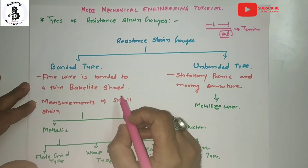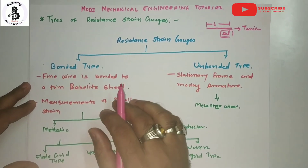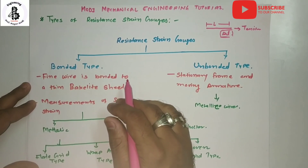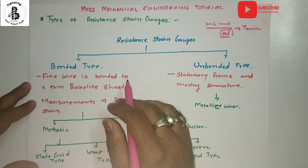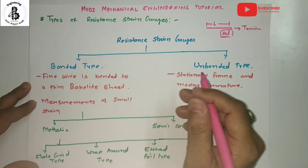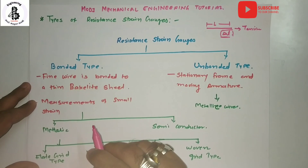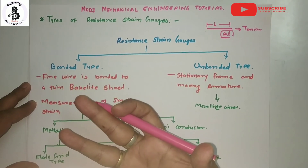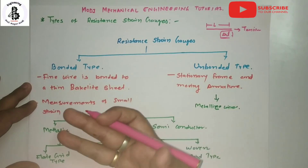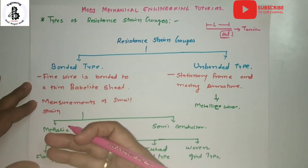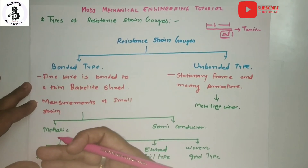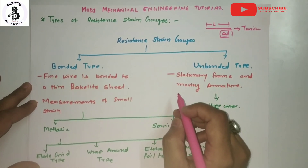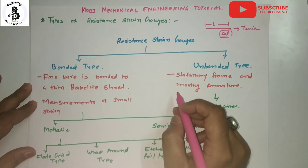The principle of operation of the strain gauge is simple: when strain is applied to thin metallic wires, its dimensions change, thus changing the resistance of the wire. It has a wide range of applications. It can be used for measurement of load, forces, stress, strain, torque, displacement, and flow, making it applicable across any branch of engineering.